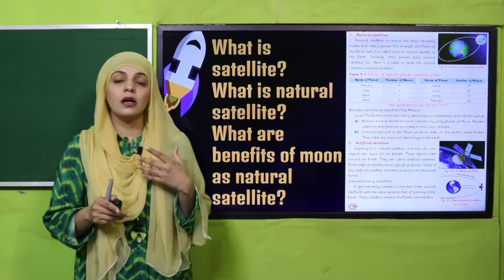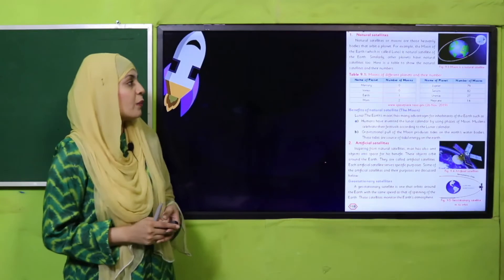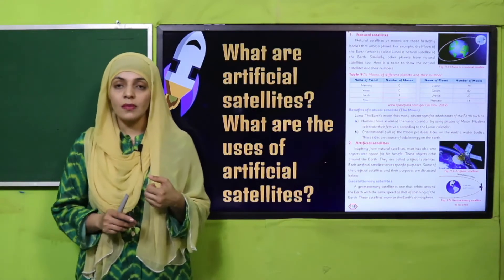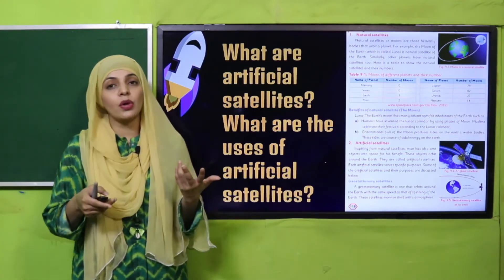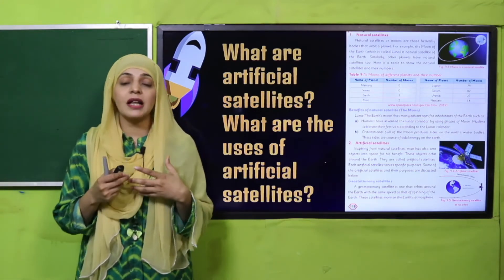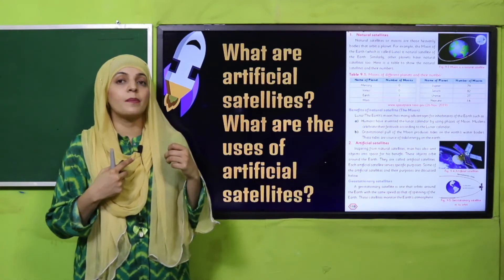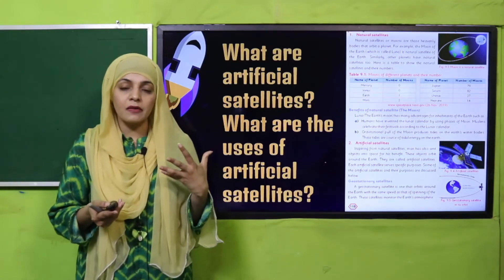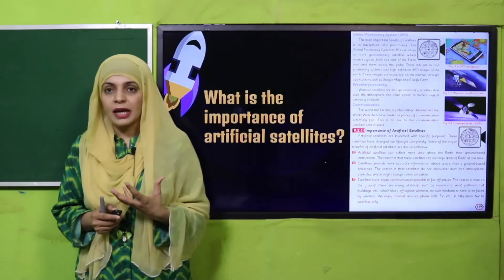Then we discussed artificial satellites. What are artificial satellites? Satellites which are sent by human beings into space and revolve around the Earth are known as artificial satellites. The uses of artificial satellites include communication, GPS (Global Positioning System), and weather forecasting. These are some of the important uses of artificial satellites.